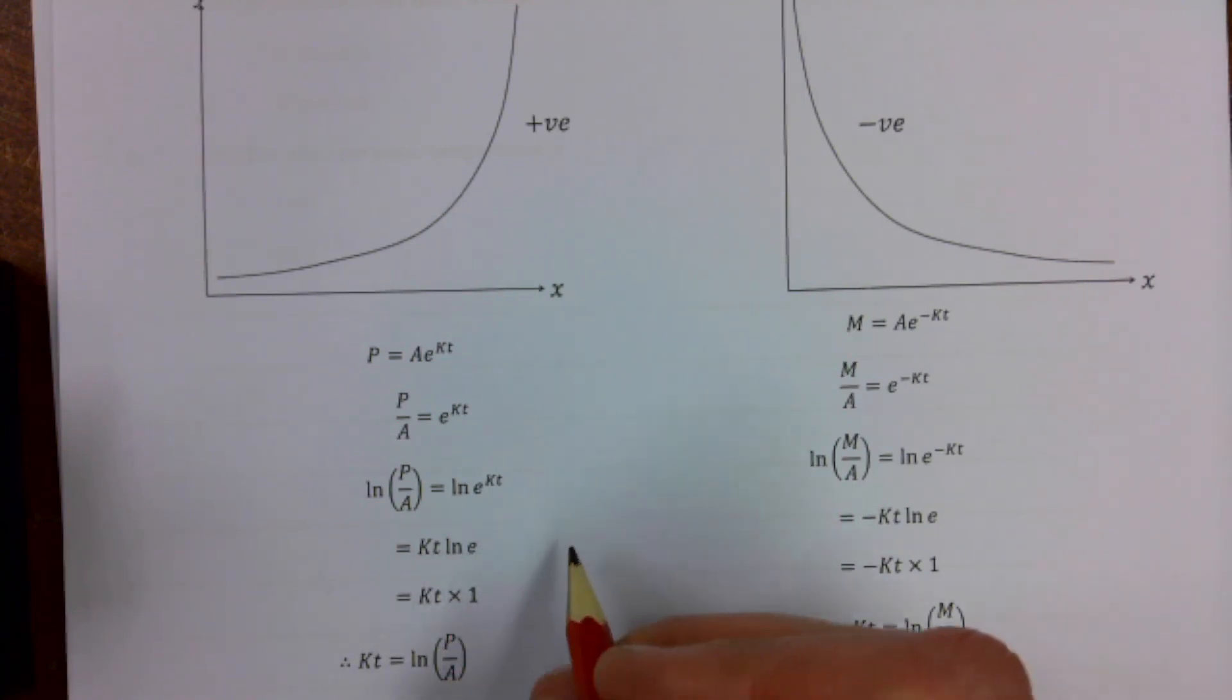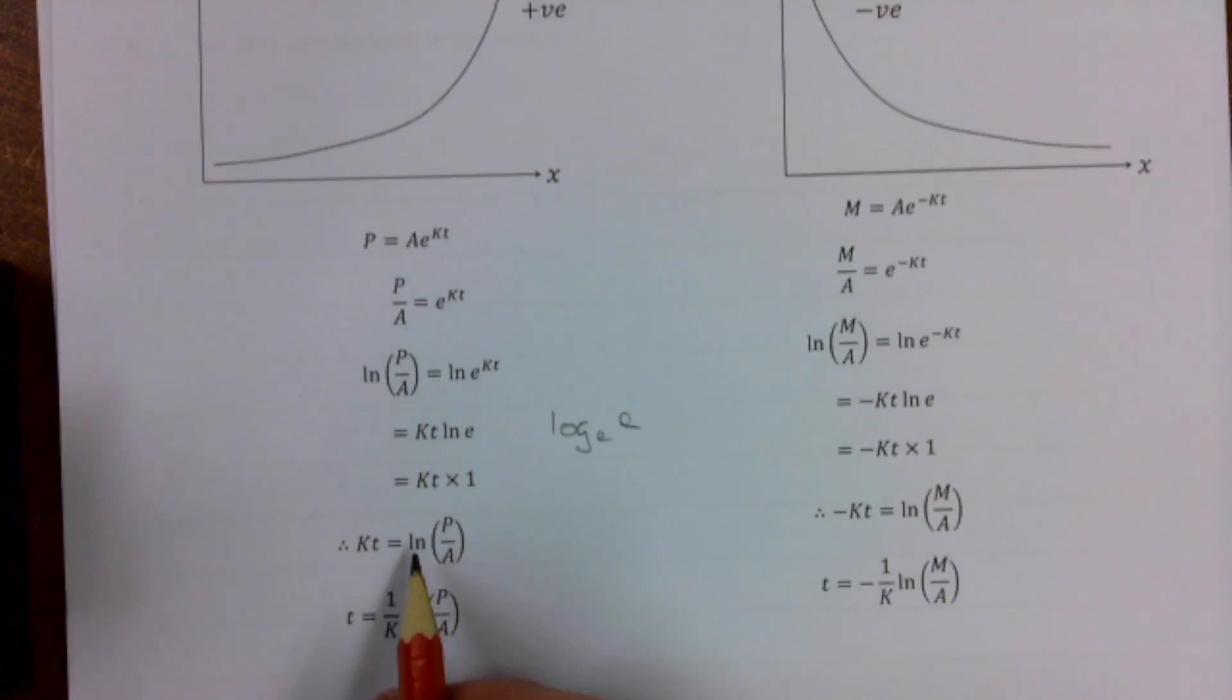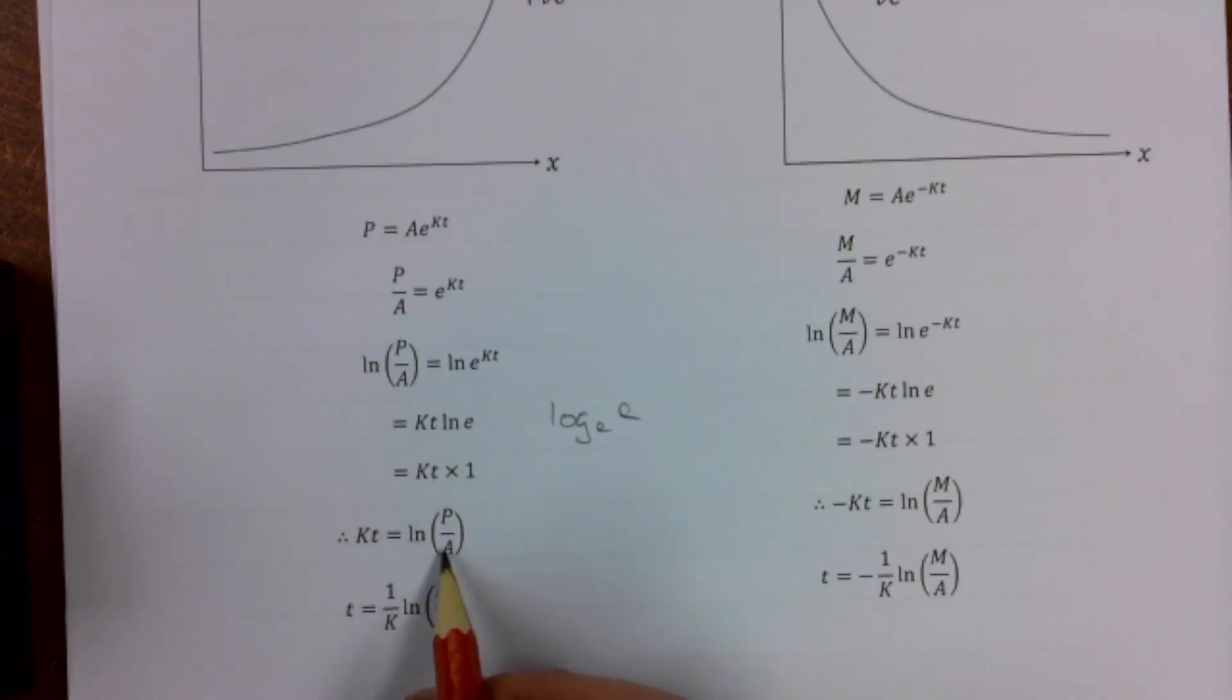It's effectively log to the base E of E. So what power do I raise E to to get E? It's of course going to be 1. And so then my kt is all of the left here. And that equals LN(P/A). kt equals LN(P/A), and then t = (1/k)·LN(P/A).